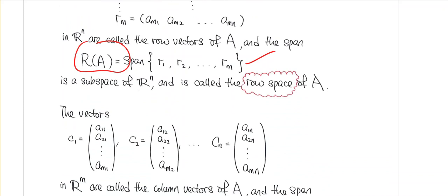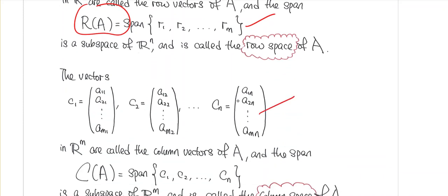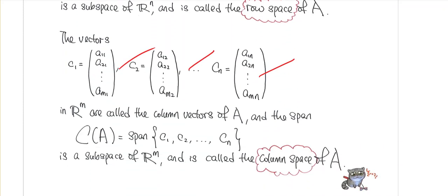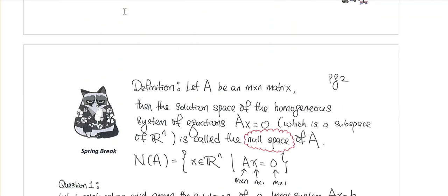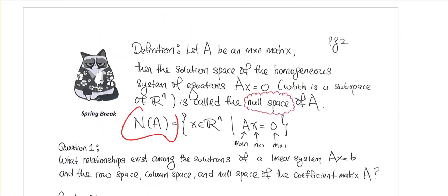Instead of looking at the row vectors, if you look at the column vectors of this matrix A and again look at the set of all possible linear combinations — the span — then again you form a vector space, and that vector space is known as the column space of this matrix A. The null space of A however is defined slightly differently: it consists neither of the row vectors nor the column vectors of a matrix, but instead...